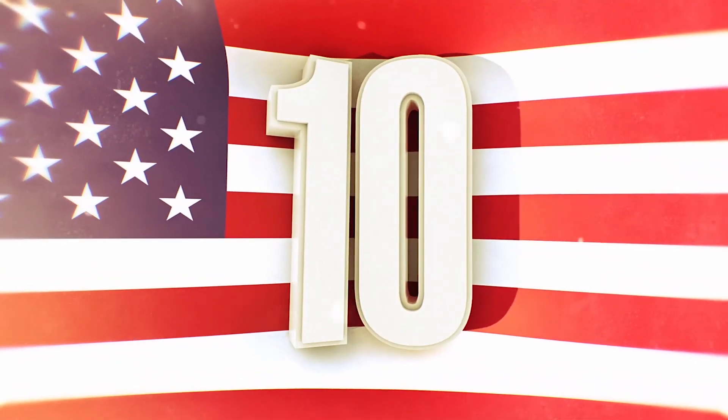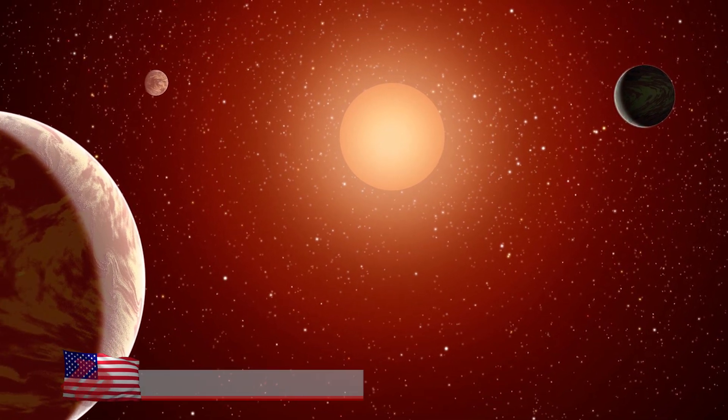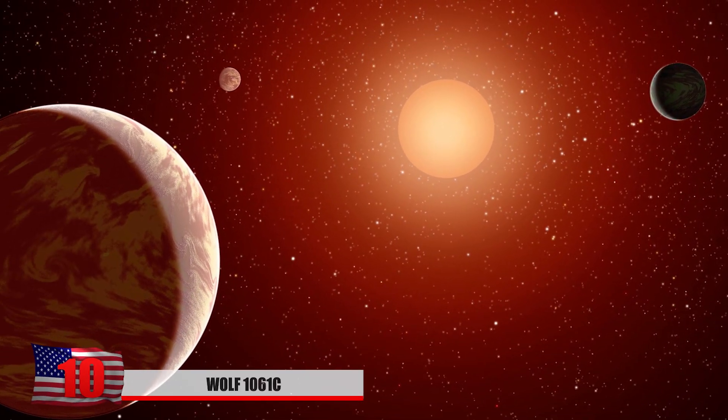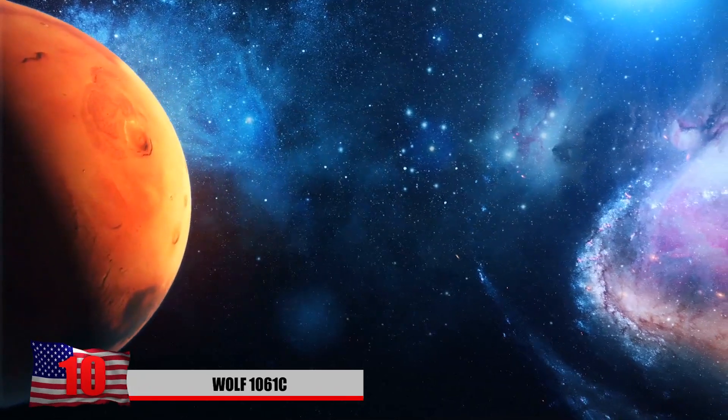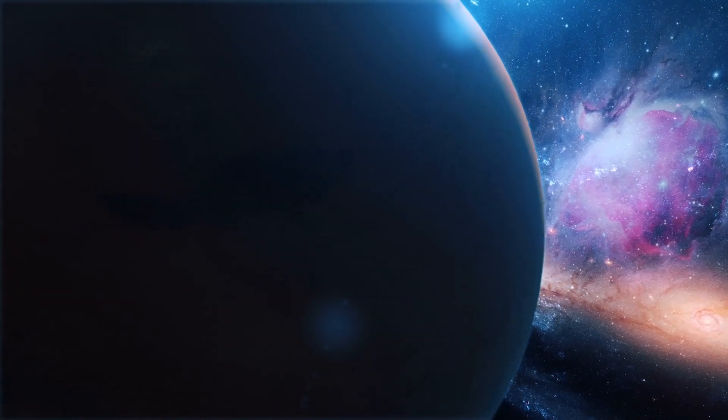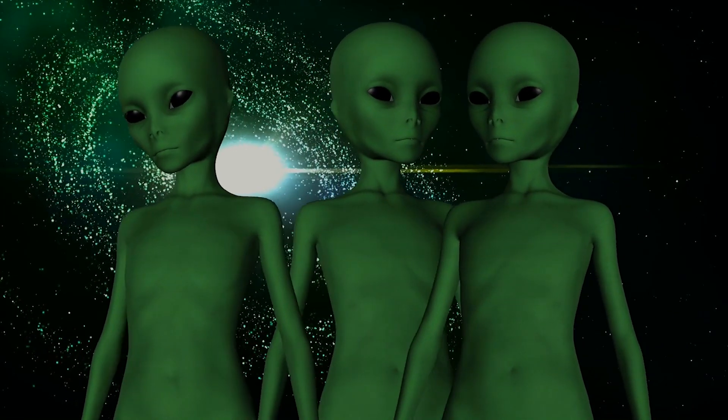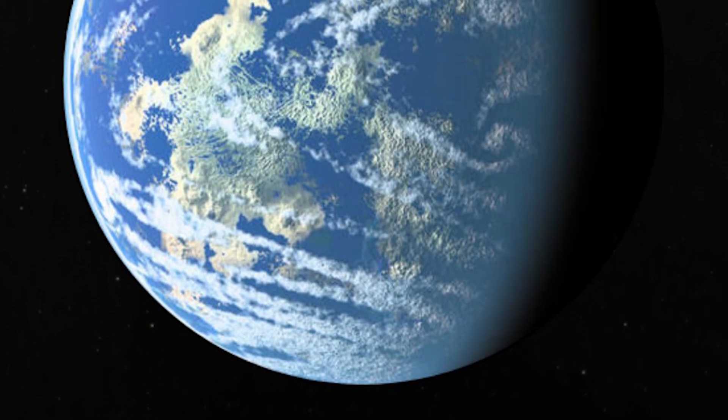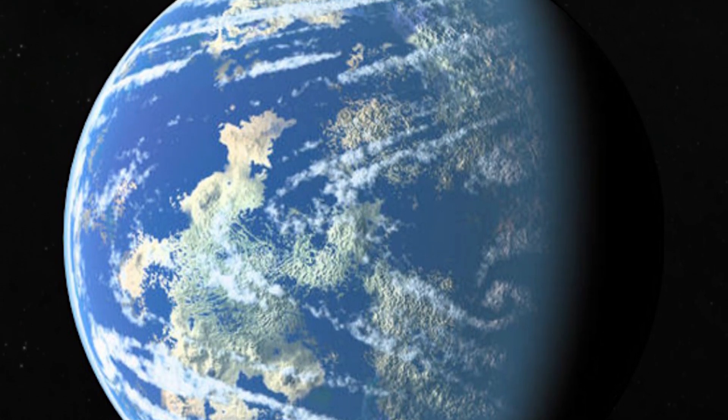Number 10, Wolf 1061 C. This planet is currently orbiting within the inhabitable zone of a host star that goes by the name of Wolf 1061. This is located all the way in the constellation of Ophiuchus, about 13.8 light years away. It makes it the fifth closest known inhabitable planet from Earth. It's definitely classified as a super-Earth exoplanet due to its radius measuring more than 1.5 times the size of our planet.